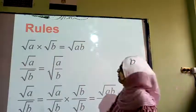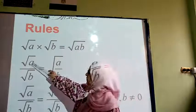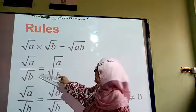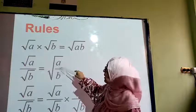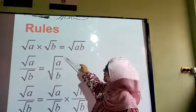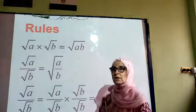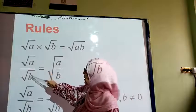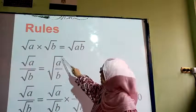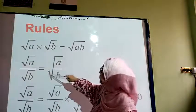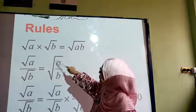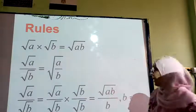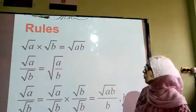If we have a root divided by another root, then we can put them together under the same root. So if I have root 2 over root 5, I can put it inside the root, so it is going to be root(2/5).